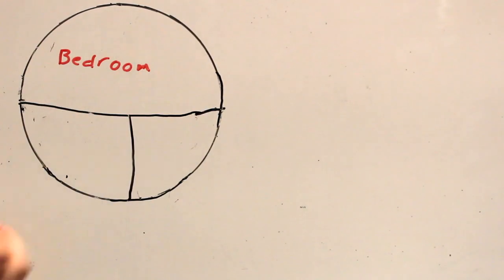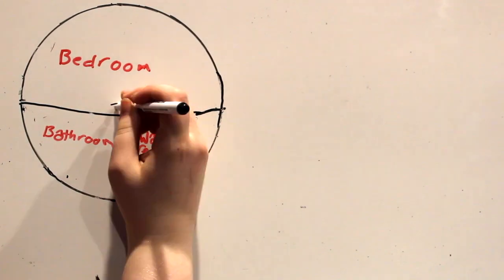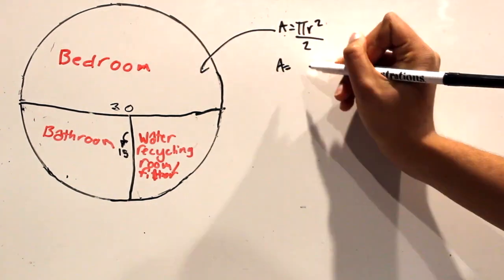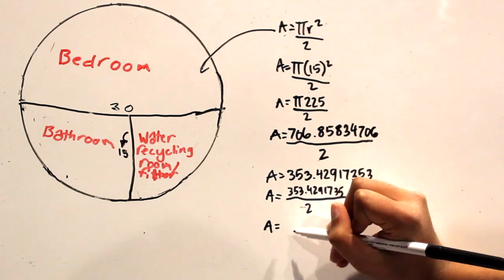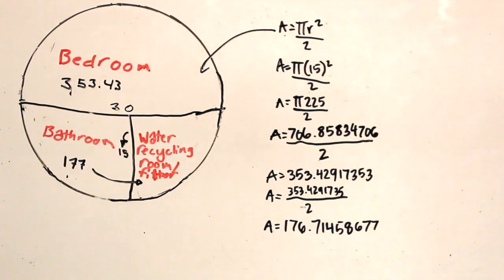On the third floor, there is a bedroom, a bathroom, and a room for a water filter. The bedroom has a total area of about 353 feet, and the bathroom and water filter room both have an area of about 177 feet.